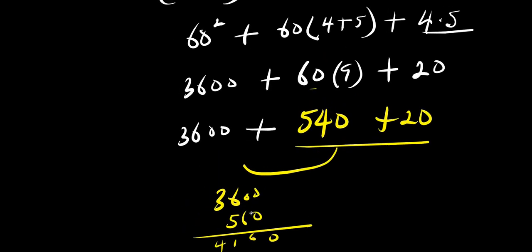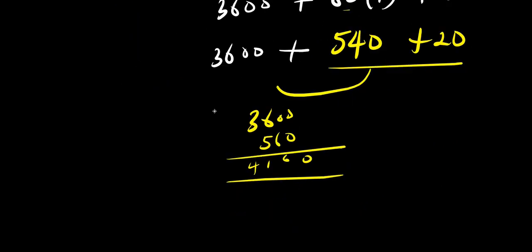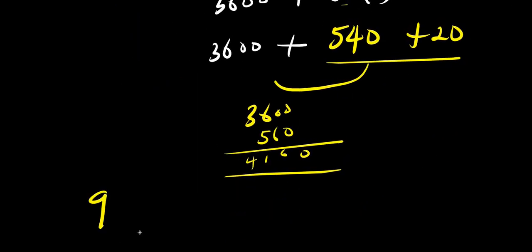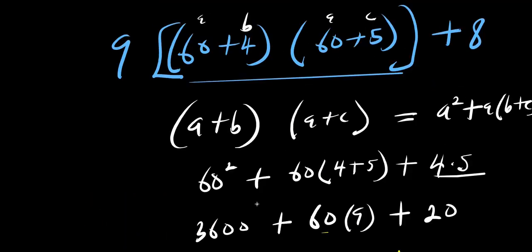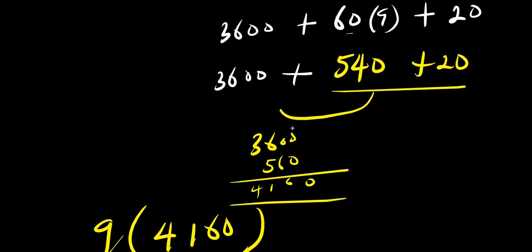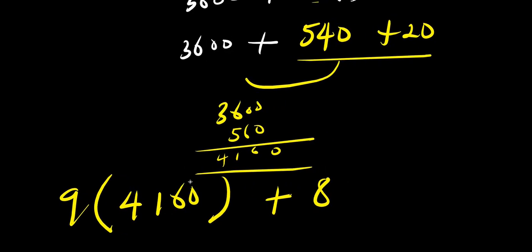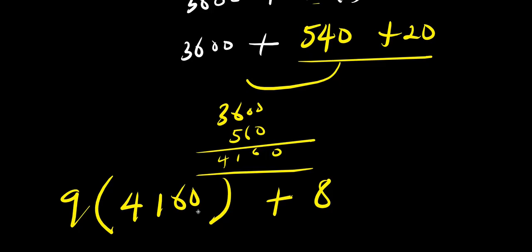Now there is a factor of 9 to multiply by 4160, plus 8. So we compute 9 times 4160 plus 8.